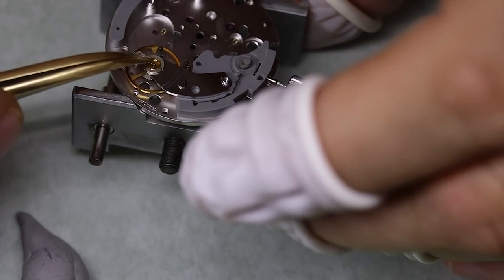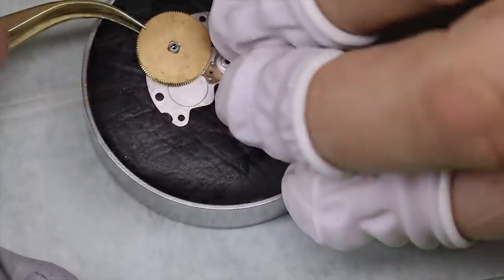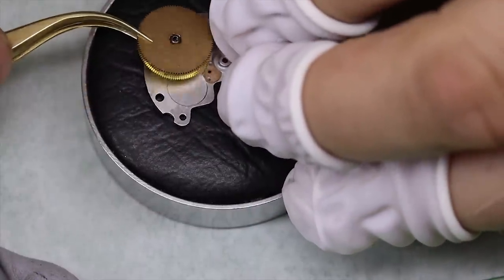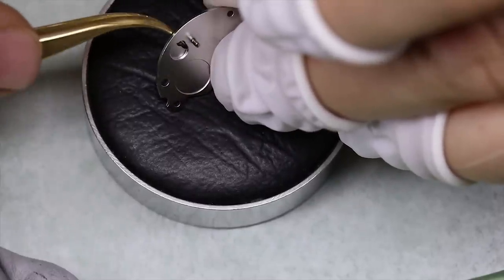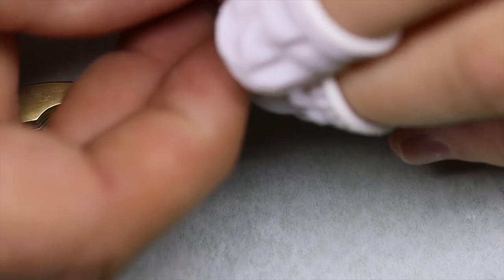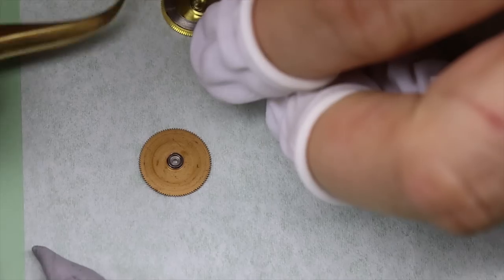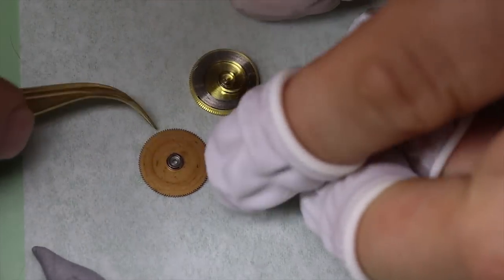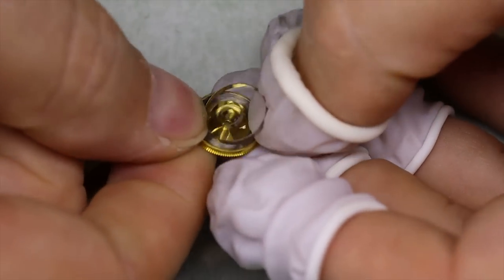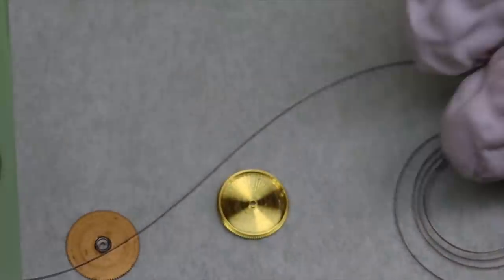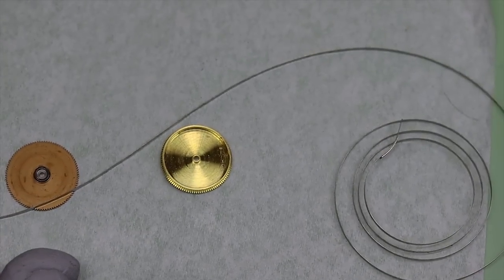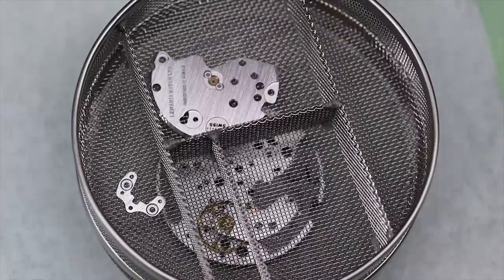Another unusual thing with this caliber as compared to other Lemania calibers or Omega is the barrel solution. We see it has a pin going through it in the same way as we saw in the Junghans watch for instance. Also a very cheap way of doing it. So there's so many things in this movement that scream out cost savings. And to Lemania's credit, it's still a very high performing movement.